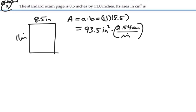we can get rid of 1 of the inches, but we need to get rid of 2 of them, so we're going to multiply it by this squared, so we're going to have 93.5 times 2.54 squared,